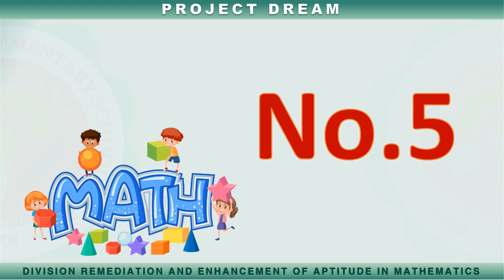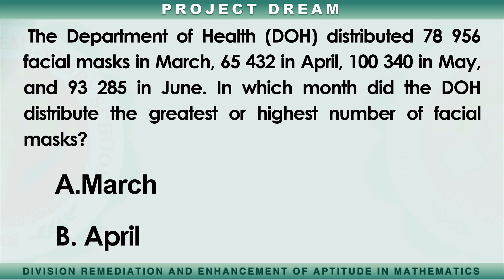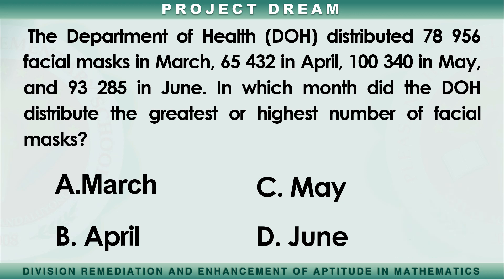Number 5: The Department of Health (DOH) distributed 78,956 facial masks in March; 65,432 in April; 100,340 in May; and 93,285 in June. In which month did the DOH distribute the greatest number of facial masks? A: March, B: April, C: May, D: June. The answer is C — May.